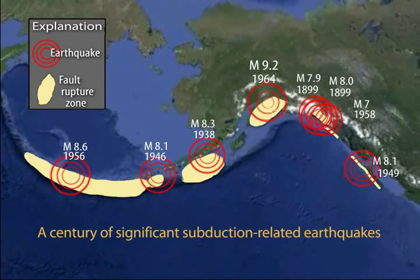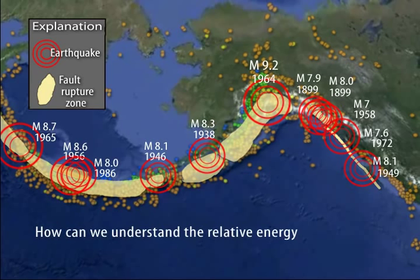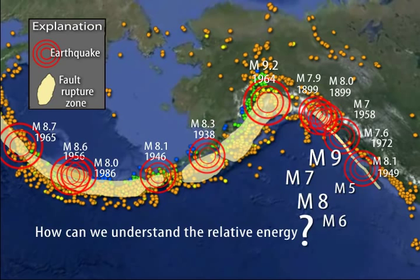Red circles mark the epicenter above the site where the fault rupture began, whereas yellow shows the fault rupture area. How can we understand the relative energy released by a great earthquake of magnitude 9 compared to smaller yet still damaging earthquakes? And just what is the rupture zone?